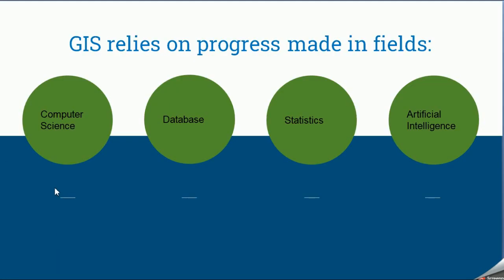GIS as a field relies on four foundational disciplines: computer science, database management, statistics, and artificial intelligence.